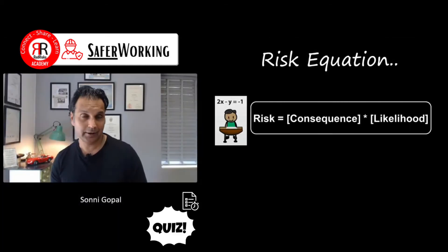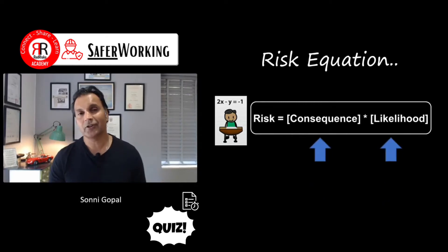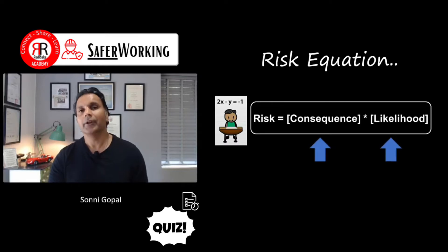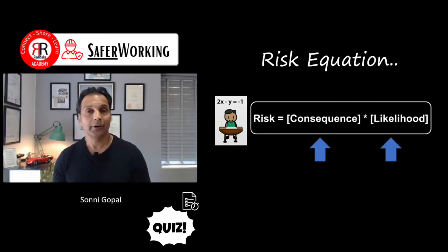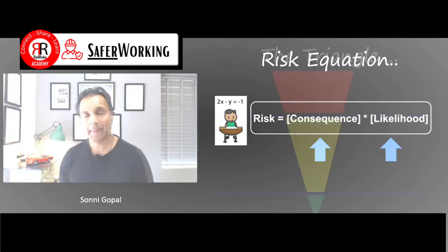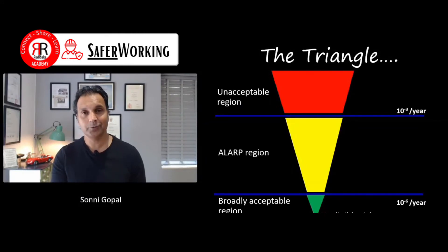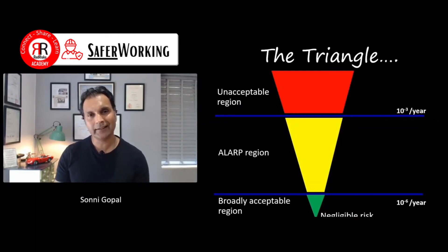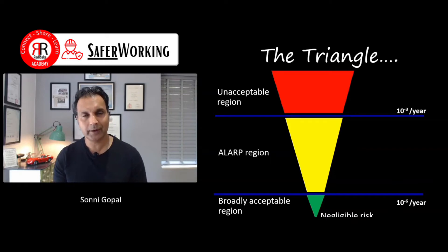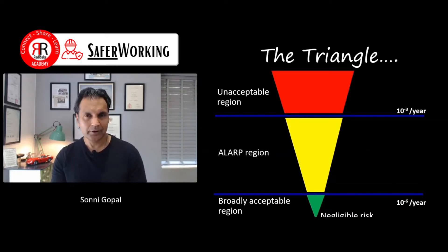You'll recall that in the risk equation, it's a product of consequences and likelihood. So there's always going to be discussions and debates where one would say you didn't reduce the likelihood to a reasonable level, or it's not reasonable to assume certain consequences. You may have come across this triangle before, where we go from an unacceptable region through to a broadly acceptable region from a risk perspective, where it's negligible risk. And in between is the ALARP region.